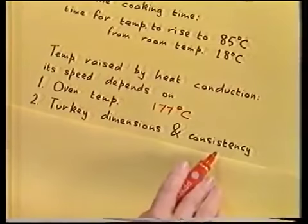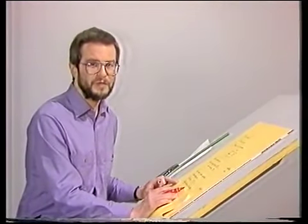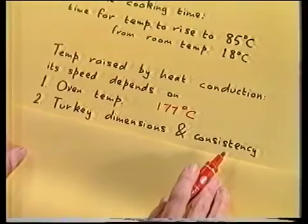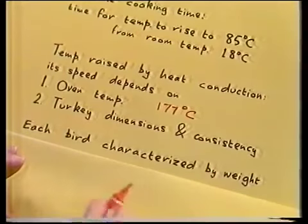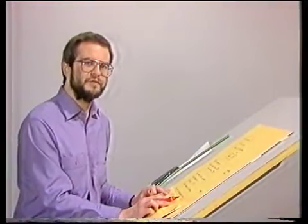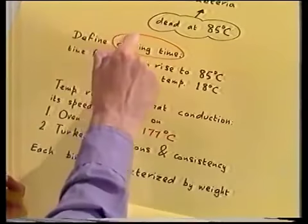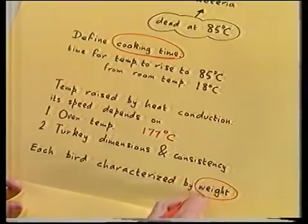Now for the turkey's dimensions and consistency. There are various possible measures of the turkey's size which may be relevant, such as its weight, volume, length from end to end, and surface area — its shape could be important too. We're going to assume that the shapes of all turkeys are geometrically similar, meaning each bird is a precisely scaled version of any other. We'll also assume they're all of the same average consistency. This means that each of the bird's vital statistics — volume, length, surface area — will be determined by the weight alone. So I've simplified the situation and I'm left with just two major factors: cooking time and weight.